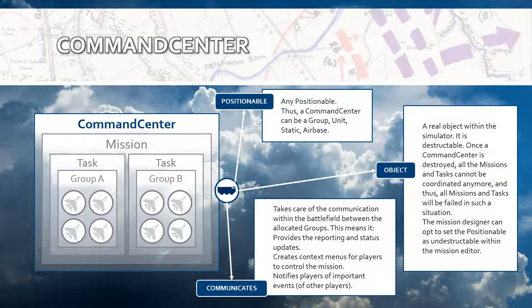The command center takes care of the communication in the battlefield between the allocated groups. When players are flying within the mission, they will get instructions received from the command center, targeted to the group the player is flying in and the player himself. Updates can be communicated — like a task is finished, a task is joined by a player, and so on.